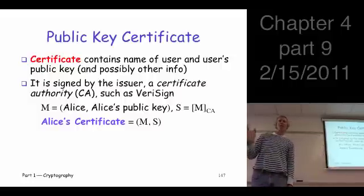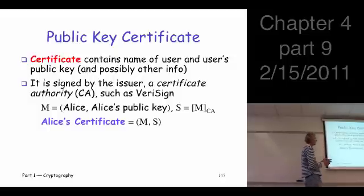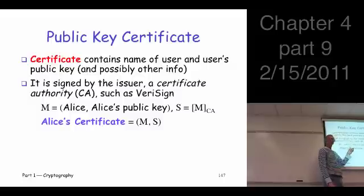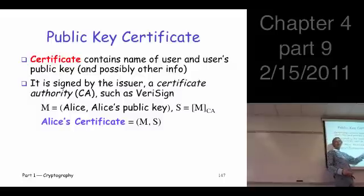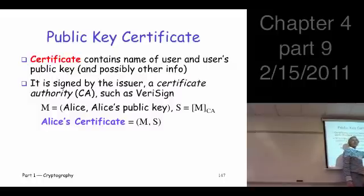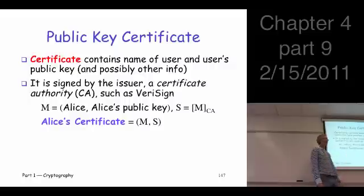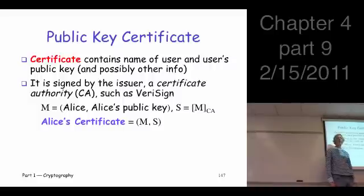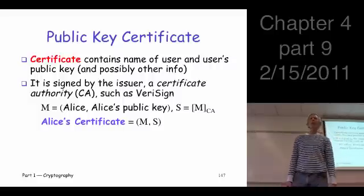The biggest certificate authority out there is VeriSign, there are a few others. So the certificate looks something like this: it has the name Alice, because it belongs to Alice, it's got Alice's actual public key — the bits that are her public key. And it's signed by a certificate authority using the CA's private key. Those two things together form the digital certificate.